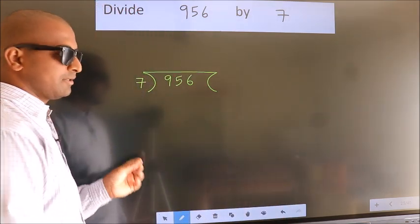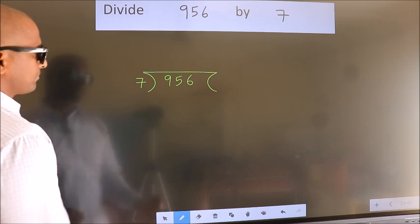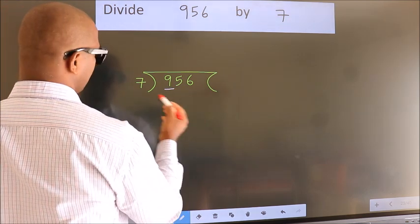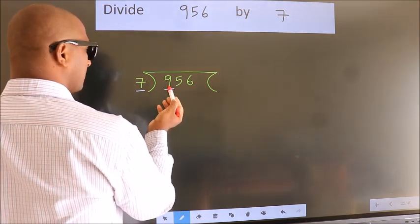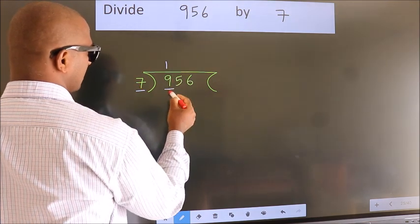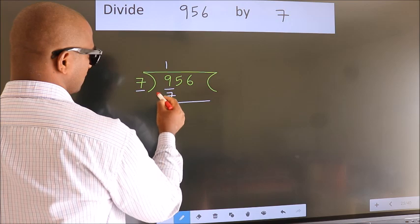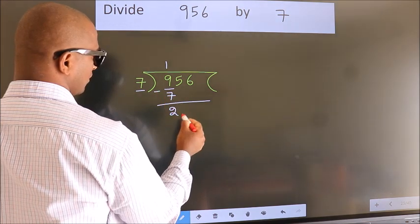This is your step 1. Next, here we have 9, here 7. A number close to 9 in the 7 table is 7 once, 7. Now we should subtract. We get 2.